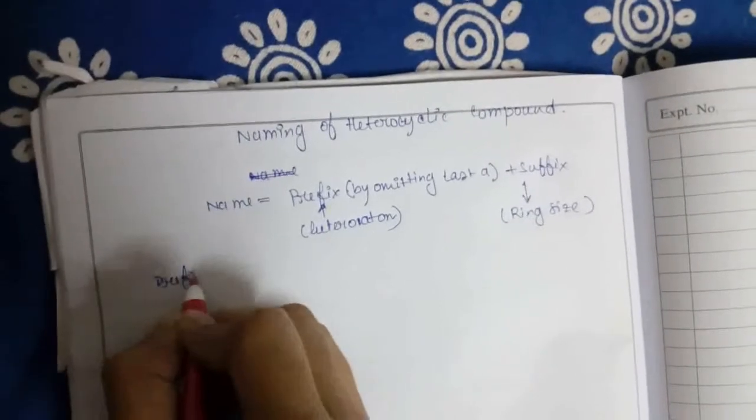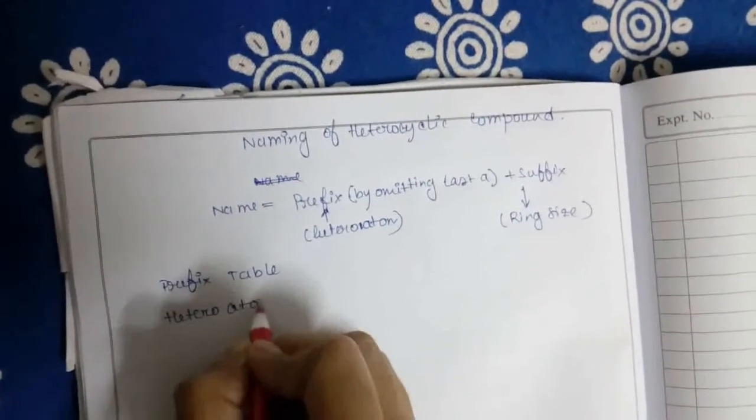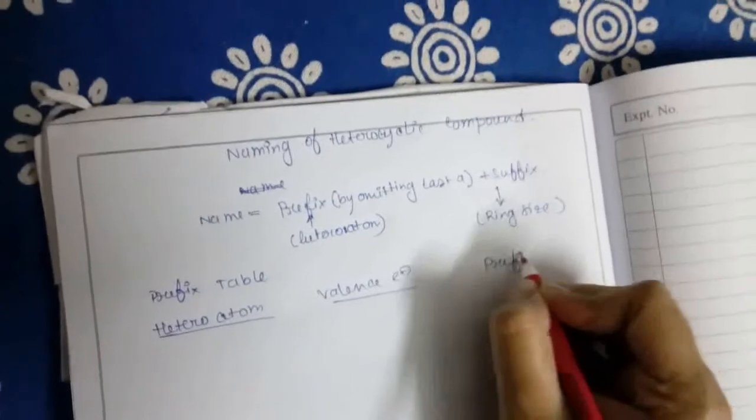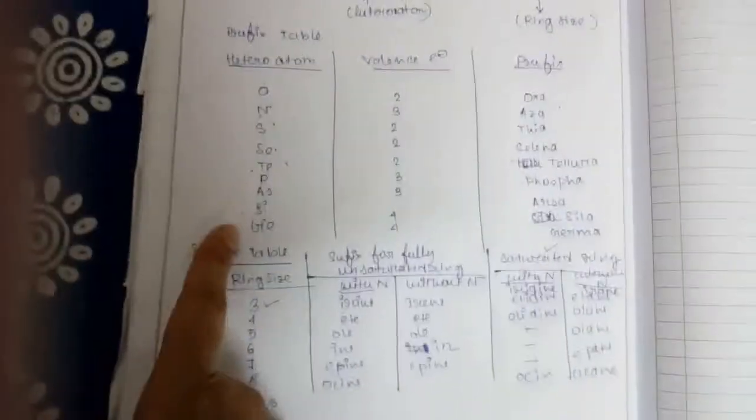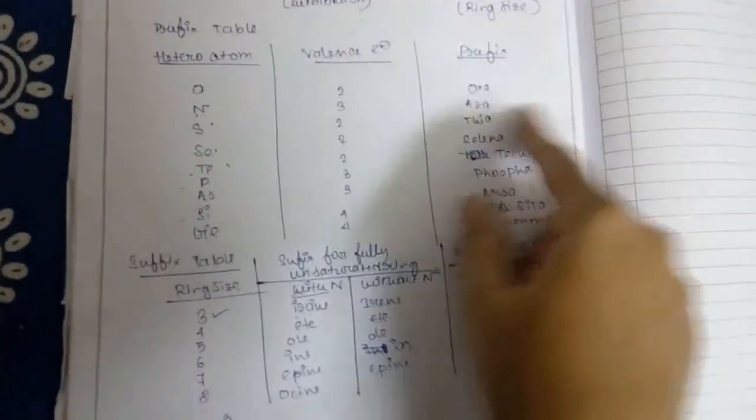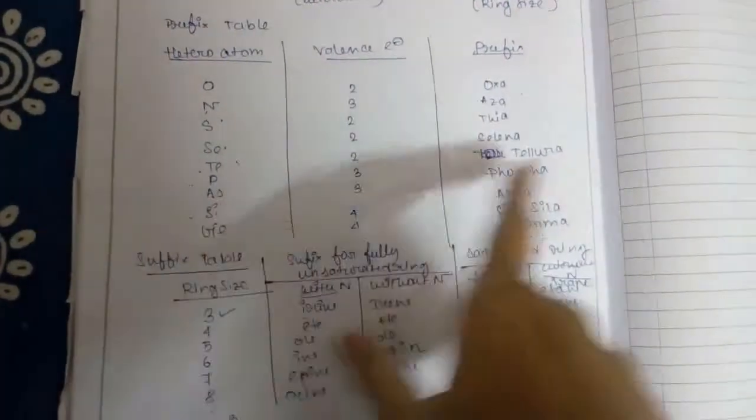Now, the prefix table: hetero atoms, their valence electrons, and corresponding prefixes. The hetero atoms are oxygen, nitrogen, sulfur, selenium, tellurium, phosphorus, arsenic, silicon, and germanium. These hetero atoms are all except carbon and contain lone pairs. Their corresponding prefixes are: oxygen - oxa, nitrogen - aza, sulfur - thia, selenium - selena, tellurium - tellura, phosphorus - phospha, arsenic - arsa, silicon - sila, and germanium - germa.